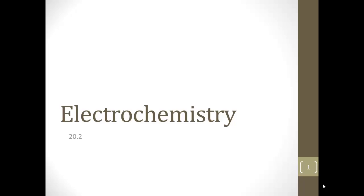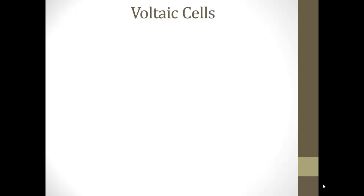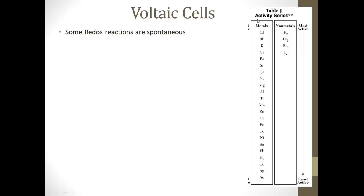Hi, and welcome to our video for 20.2, electrochemistry. So far in redox, we've been talking about different types of redox reactions, and we've talked about how some of them are spontaneous, and that is determined by the activity series, where higher up elements on the activity series will spontaneously replace lower elements on the activity series.